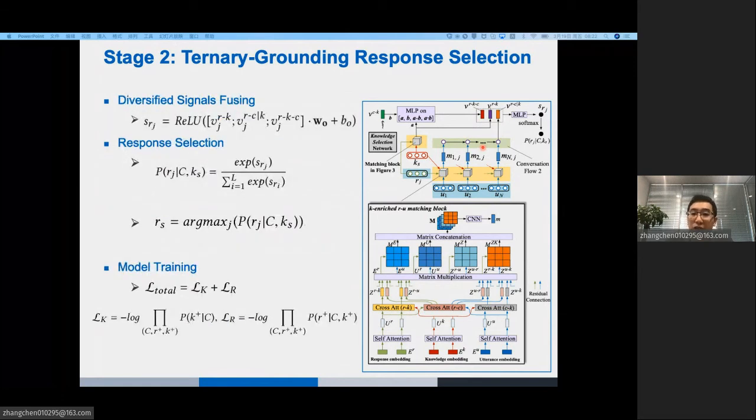After we get the three signals, we combine them in an MLP layer to get the final matching score. And then, we use a softmax layer to transform each score to its probability form. Last, we select the final response, which has a maximum probability. To train the whole model, we define the following loss functions. The loss K is for the first task, and the loss R is for the second task.